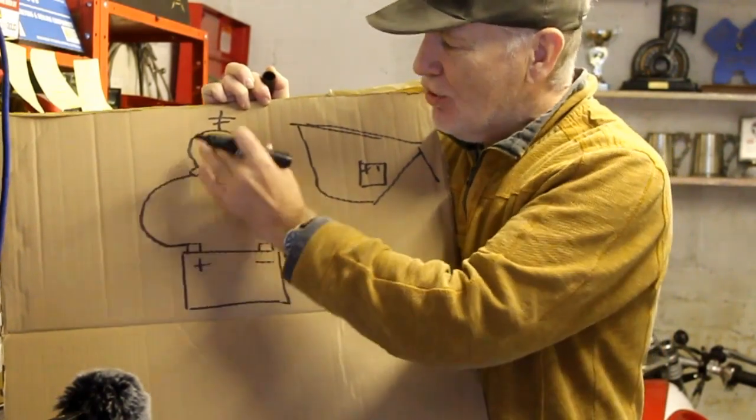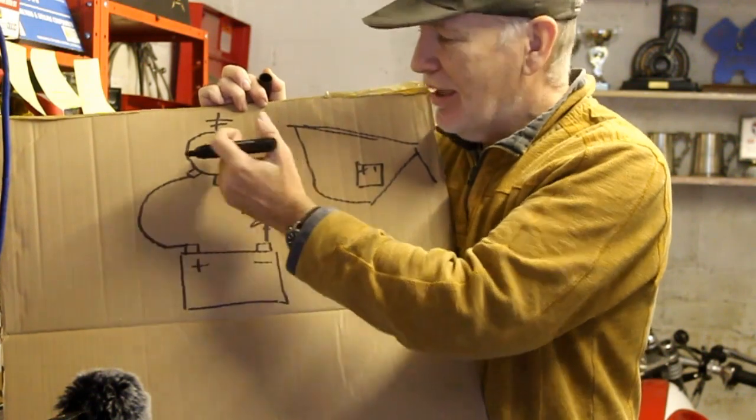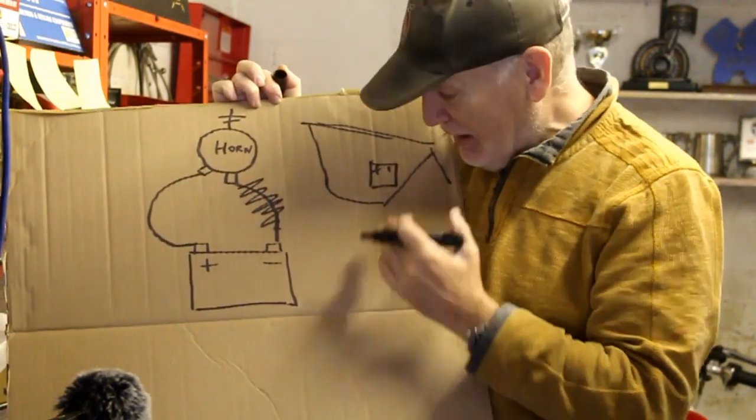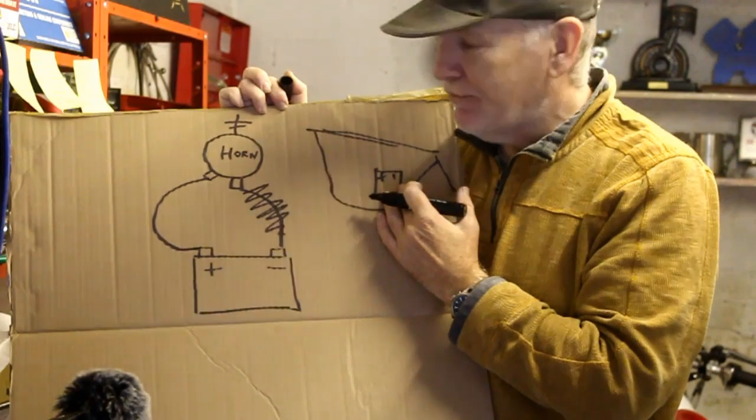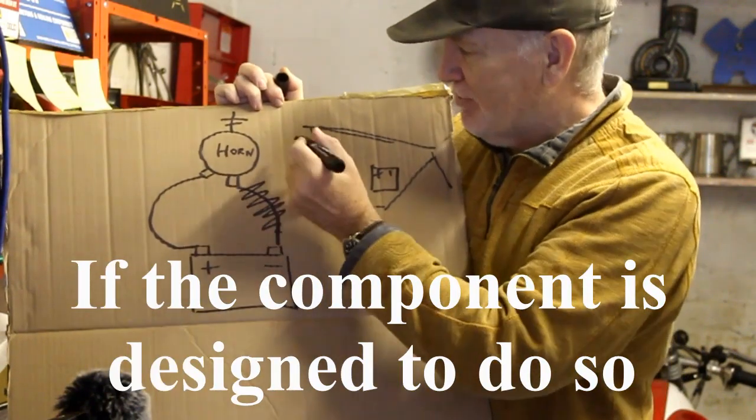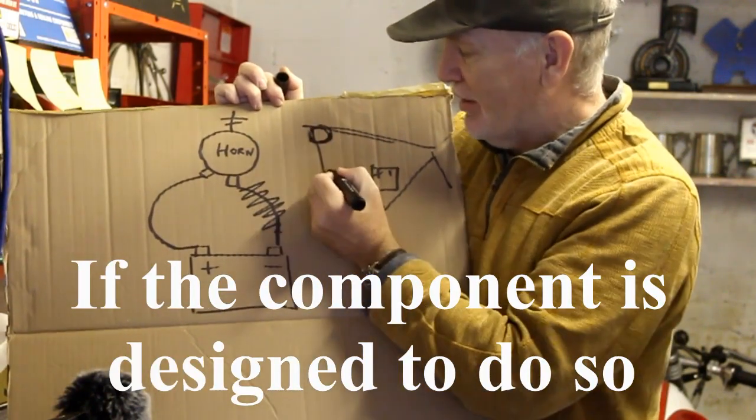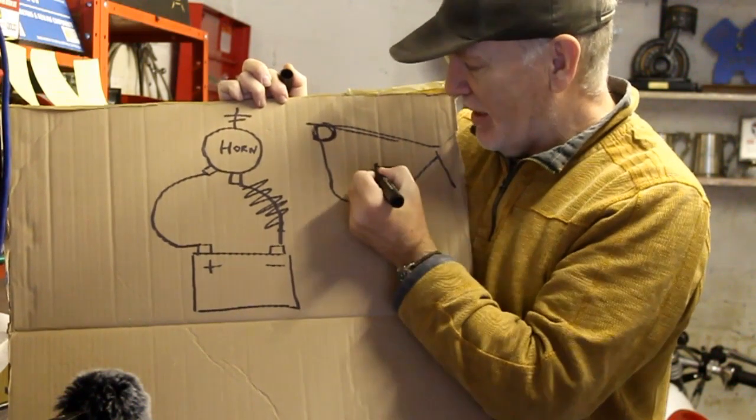If this is bolted to the frame with a good contact, so not paint on paint but metal on metal, then the electricity can flow from the battery to the component and return back to the earth side of the battery via the frame itself.